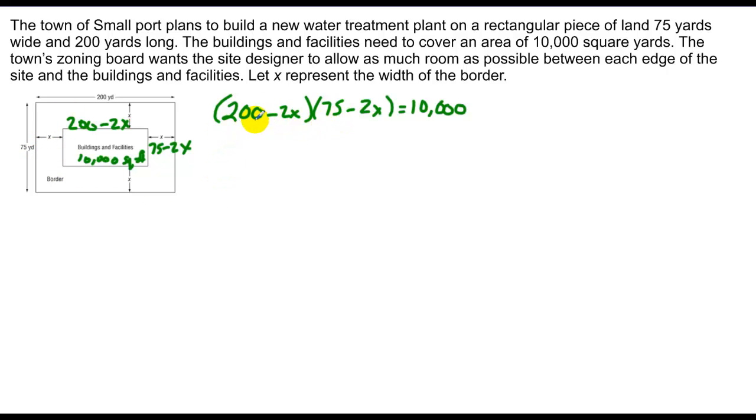But now I have to do the algebra involved, so I'm going to have to FOIL this out. So I take 200 times 75, which gives me 15,000 minus 400x minus 150x plus 4x squared equals 10,000.